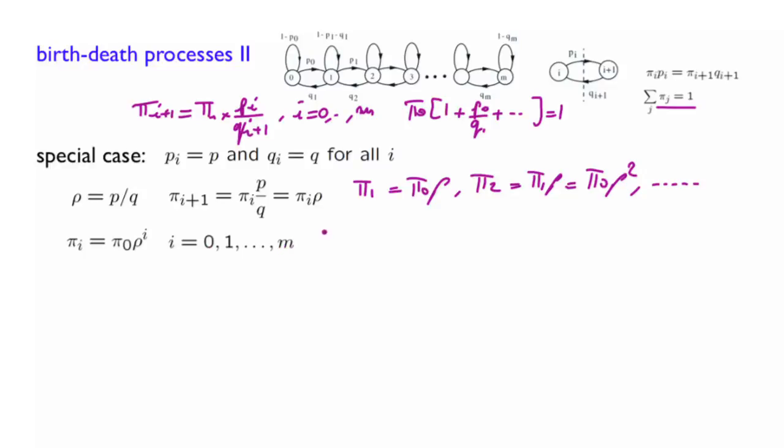Now if we use the normalization condition, we get that pi of 0 times 1 plus rho plus rho squared plus rho to the power m equals 1.